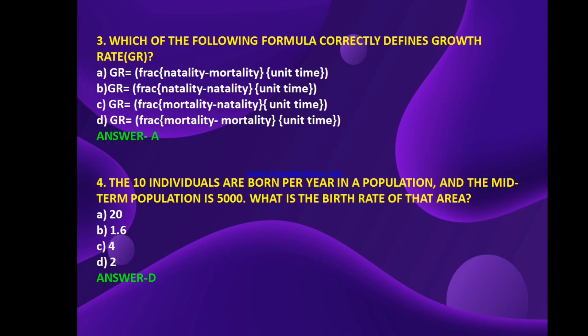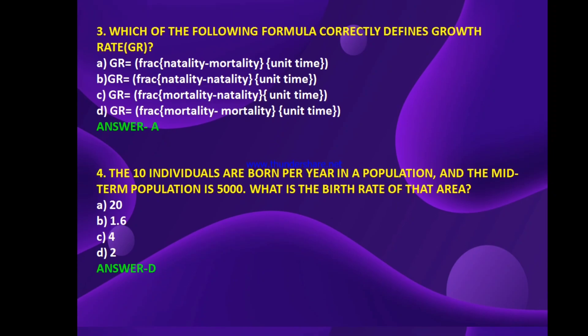Next: 10 individuals are born per year in a population and the mid-year population is 5000. What is the birth rate of that area — 20, 1.6, 4, or 2? The answer is D. Using the natality formula — fraction of number of births per year into mid-year population into 1000 — the answer is 2.